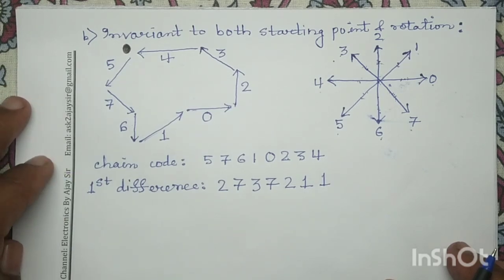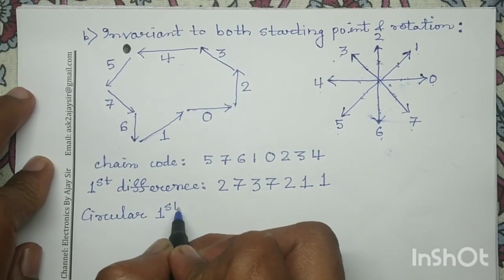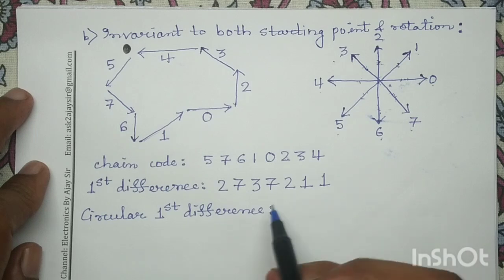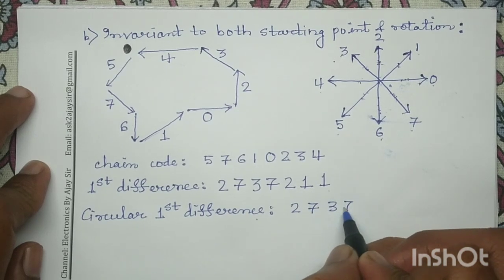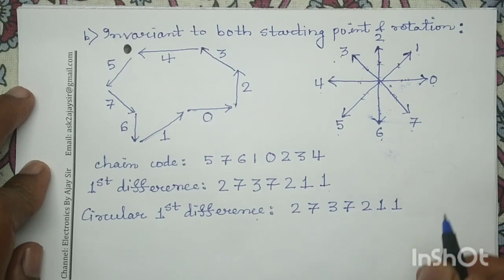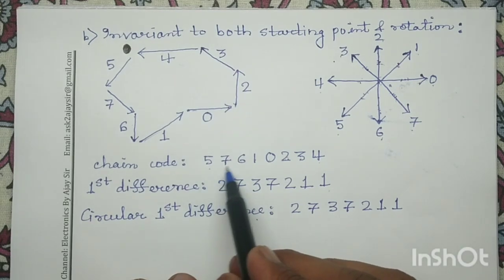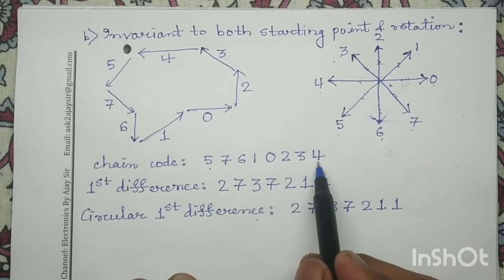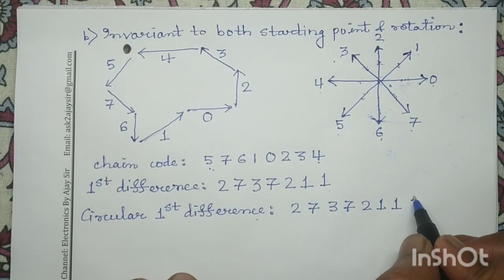After determining the first difference, next we will determine the circular first difference. To determine the circular first difference, we write the first difference — 2 7 3 7 2 1 1 — followed by the difference between the last bit of the chain code and the starting bit. The last bit is 4 and the first bit is 5. The difference between 4 and 5 in anticlockwise direction is 1. So I will write here 1, giving the circular first difference as 2 7 3 7 2 1 1 1.